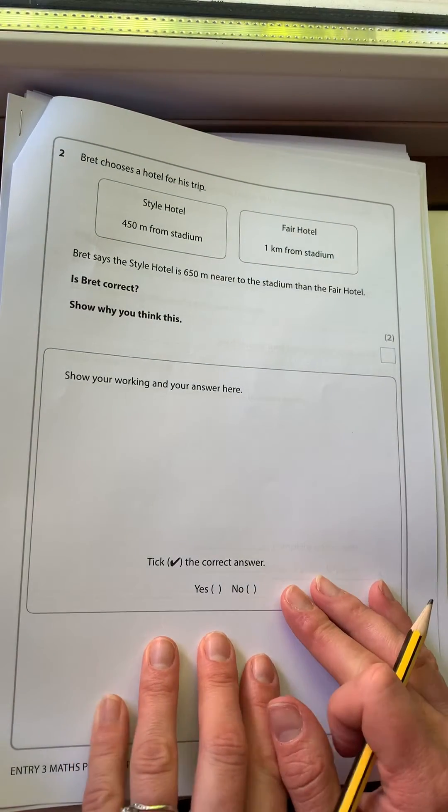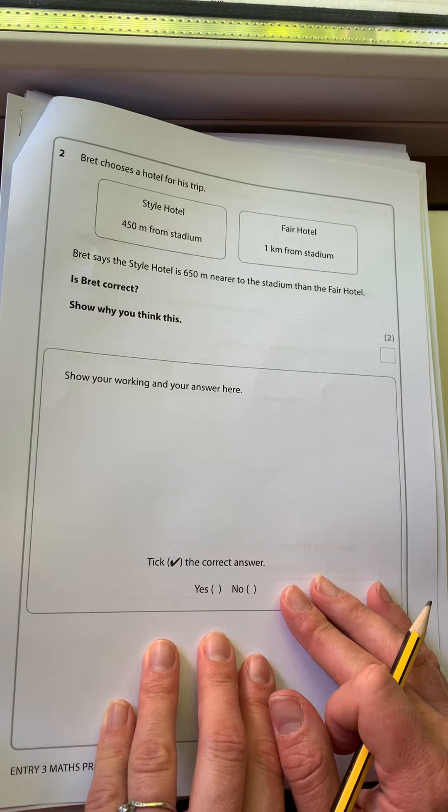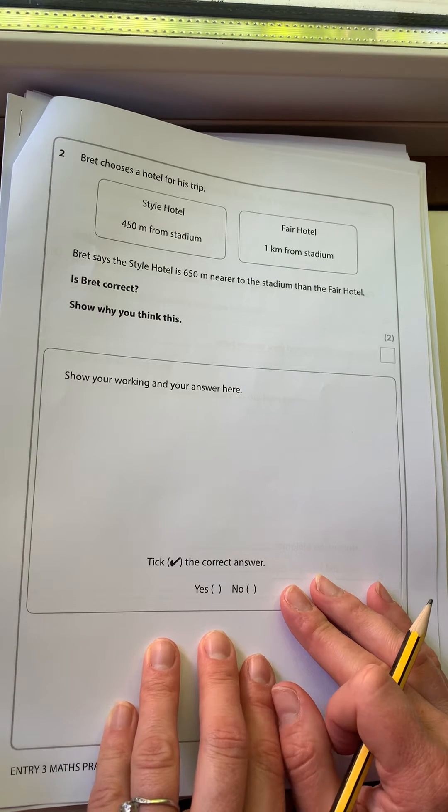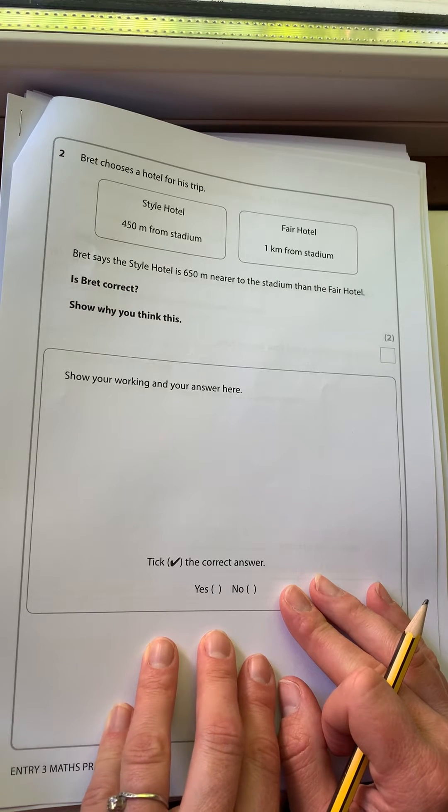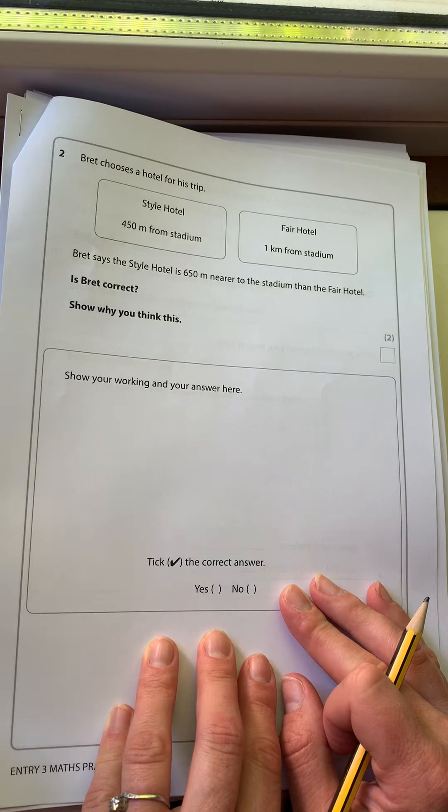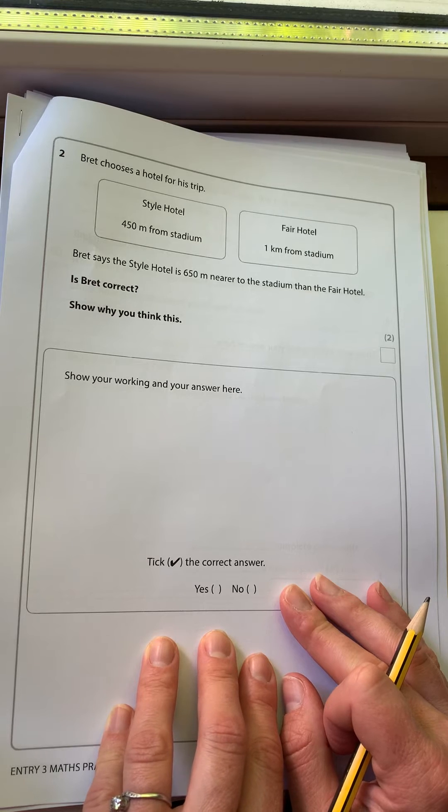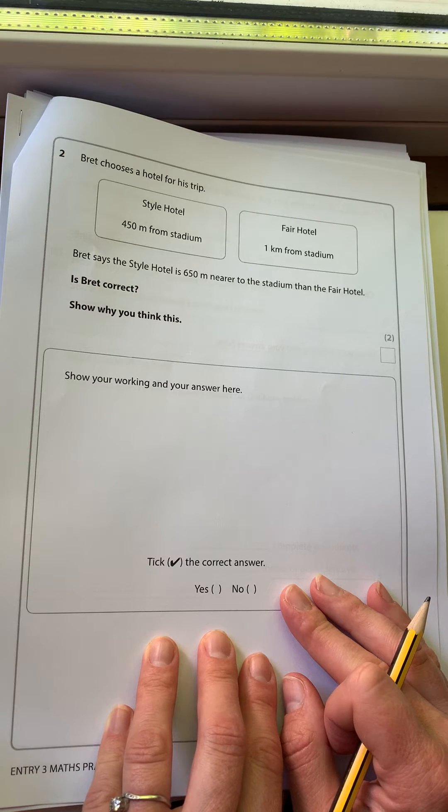Next question. Brett chooses a hotel for his trip, the Style Hotel or the Fair Hotel. He says that the Style Hotel is 650 metres nearer to the stadium than the Fair Hotel. Is Brett correct? Show why you think this.